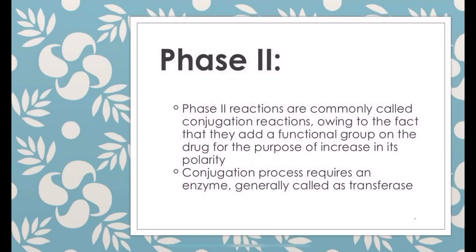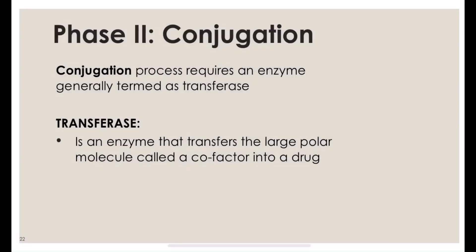We now move on to phase 2. Phase 2 reactions are commonly called conjugation reactions, as they add a functional group to the drug for the purpose of increasing its polarity. The conjugation process requires an enzyme generally called a transferase — an enzyme that transfers a large polar molecule called the cofactor into the drug.